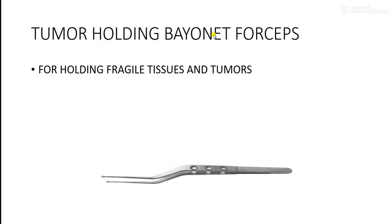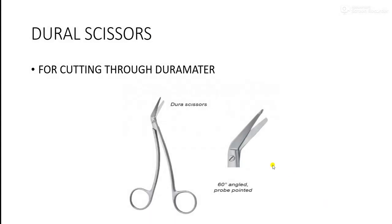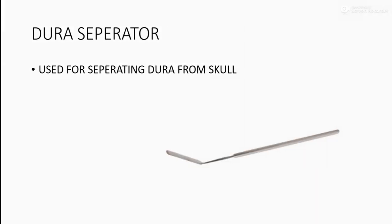Next are tumor-holding Bennett forceps. As the name suggests, this forcep is used for holding fragile tissues and tumors. Next are dural scissors, used for cutting dura mater — the outermost layer of the meninges which covers the brain and spinal cord; this scissor has a 60-degree angled rope. Next is the dura separator, used for separating the dura from the skull.